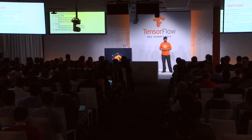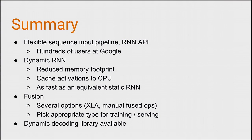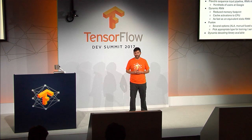To summarize: I've talked about a flexible sequence input pipeline that allows you to scale up distributed training of sequence models. I've talked about the RNN API in TensorFlow, which has hundreds of users within Google and many outside. I've talked about dynamic calculations and dynamic RNNs, which have a reduced memory footprint, allow casting GPU activations to CPU, and are essentially as fast as the equivalent for loop. I've talked about improving RNN performance via fusion and the associated trade-offs. And finally, I've introduced a new decoder library — available on GitHub now — that we hope you'll check out.